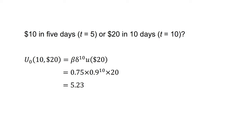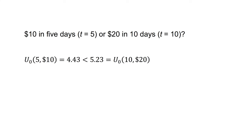The discounted utility of the $20 in 10 days, u(0, 10, 20), equals beta times delta to the 10 times u(20), which equals 0.75 times 0.9 to the 10 times 20, which equals 5.23. As u(0, 10, 20) equals 5.23, which is greater than 4.43 for u(0, 5, 10), this present biased agent will prefer to receive $20 in 10 days.